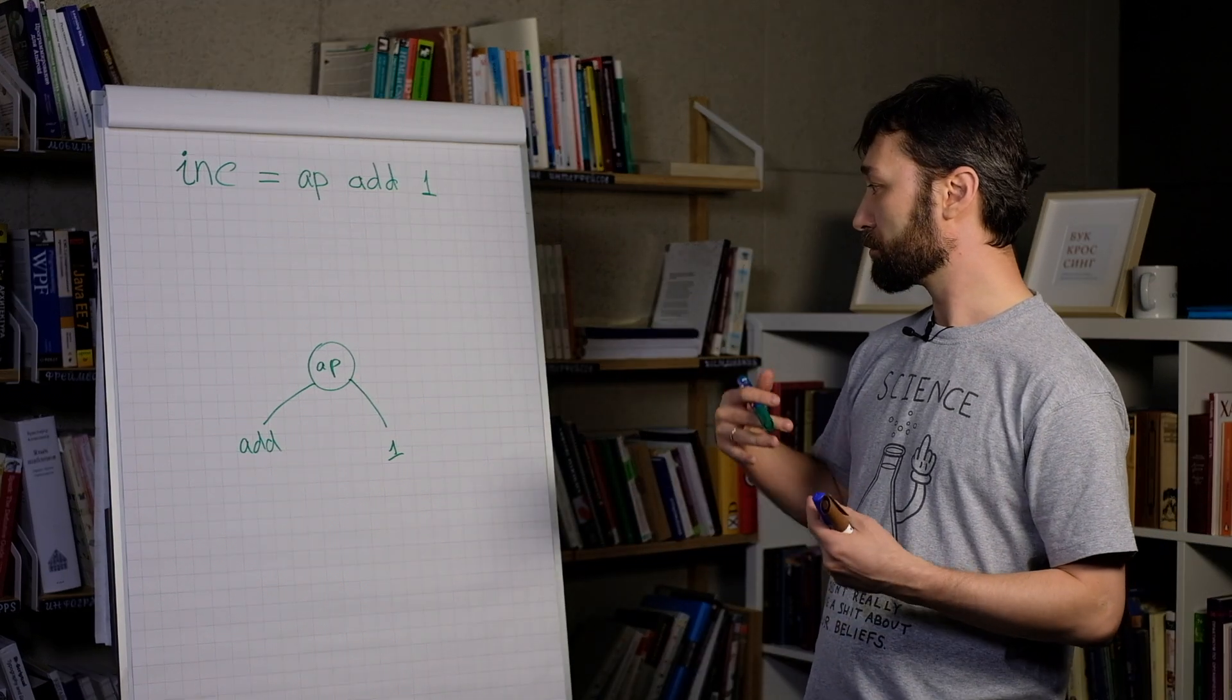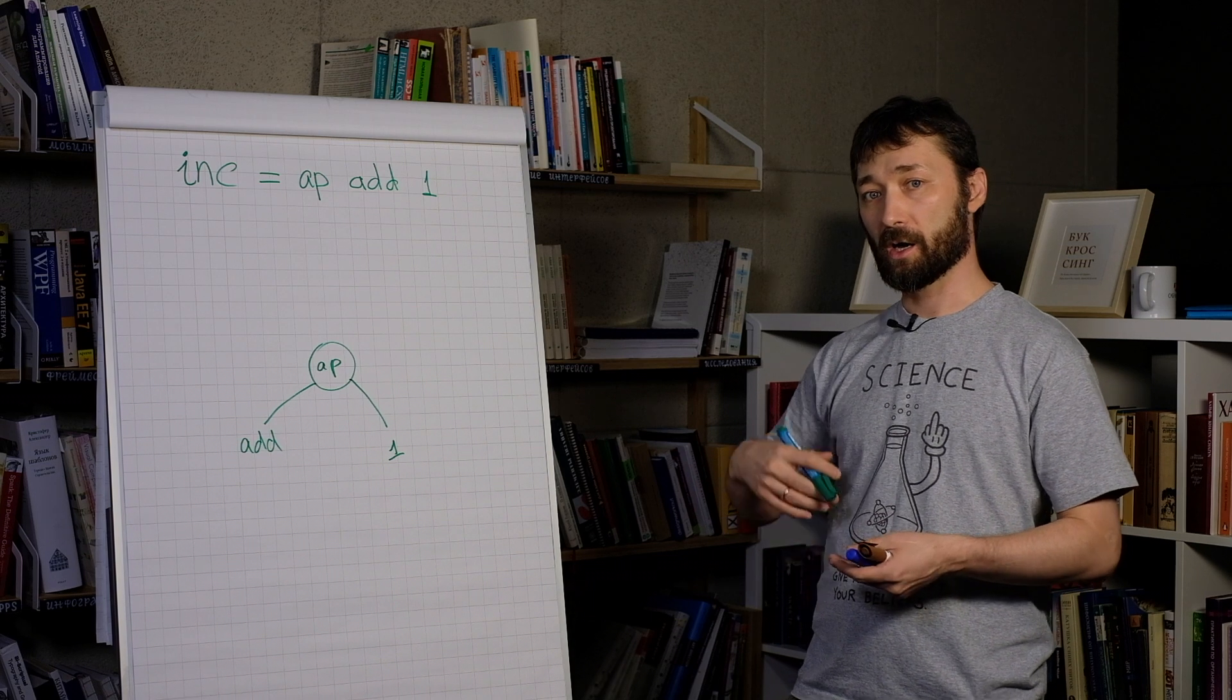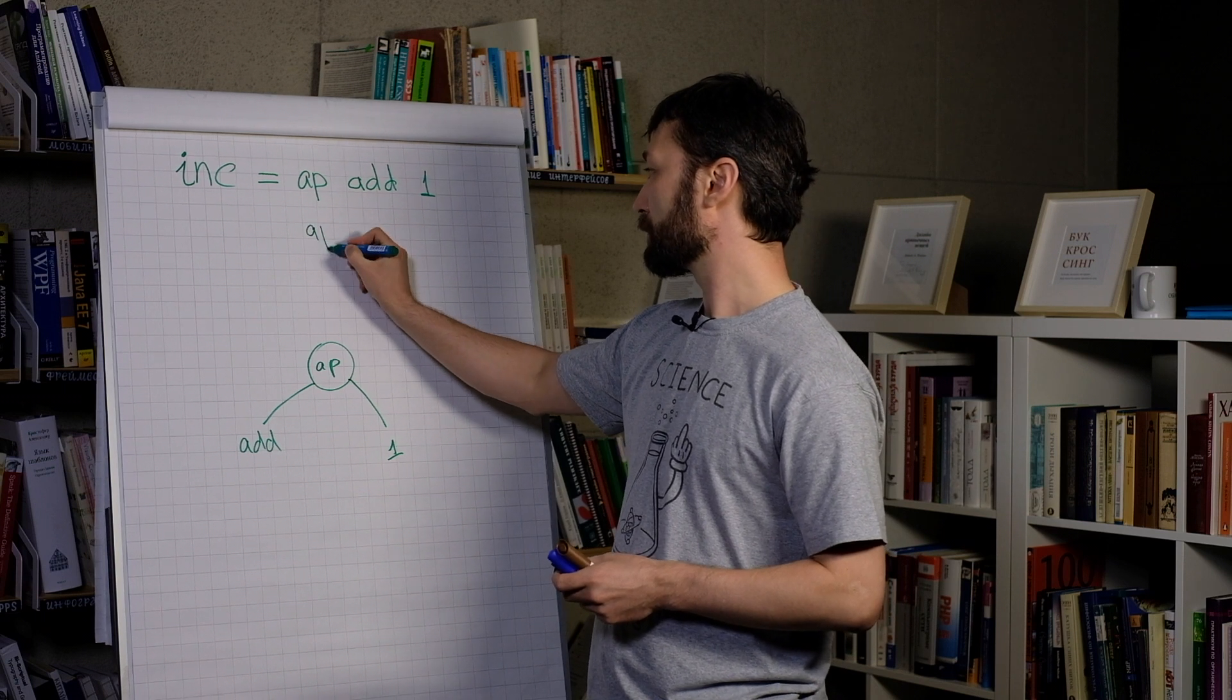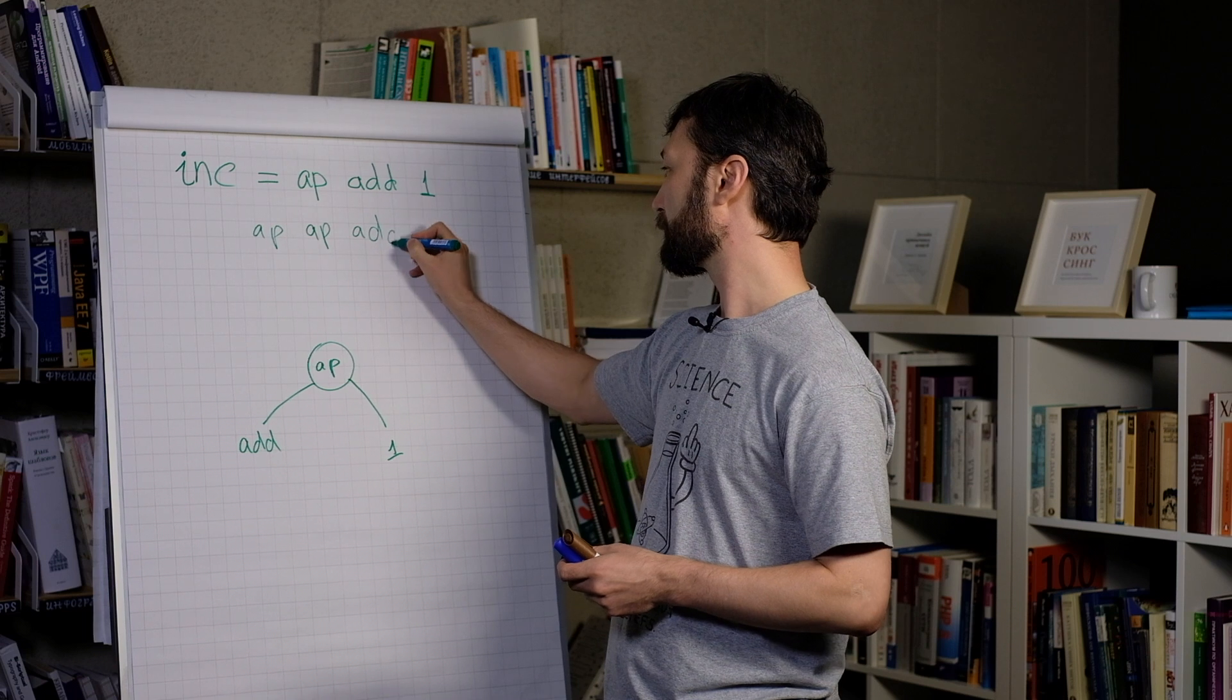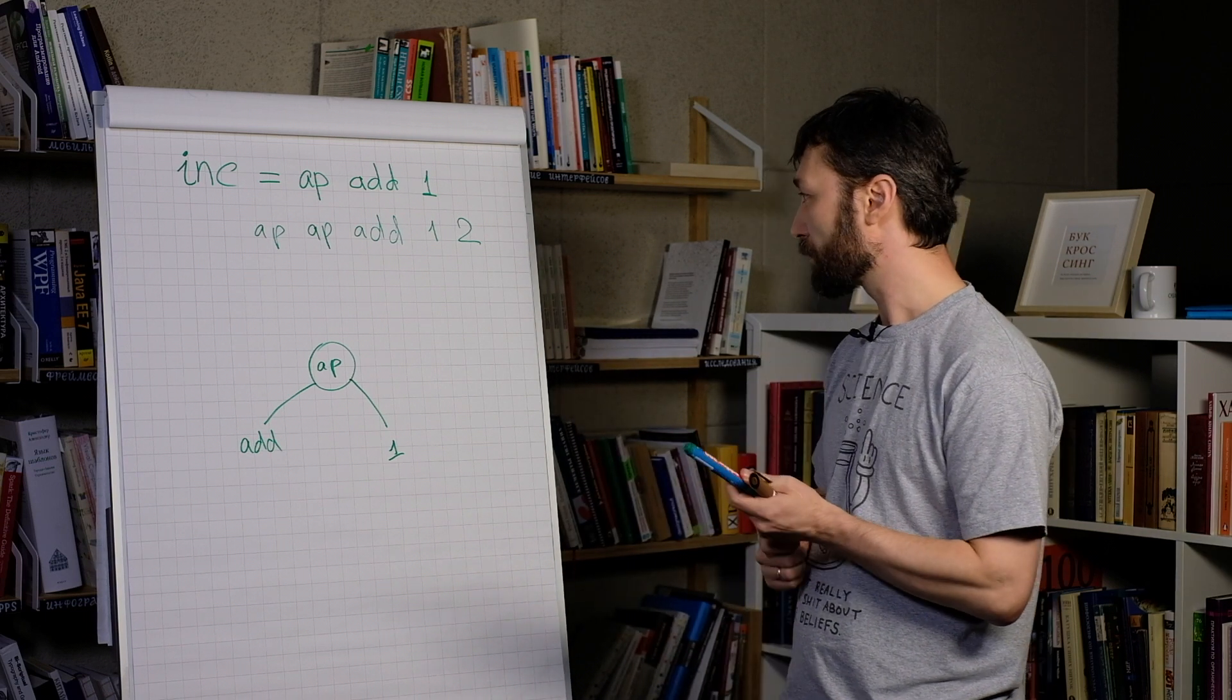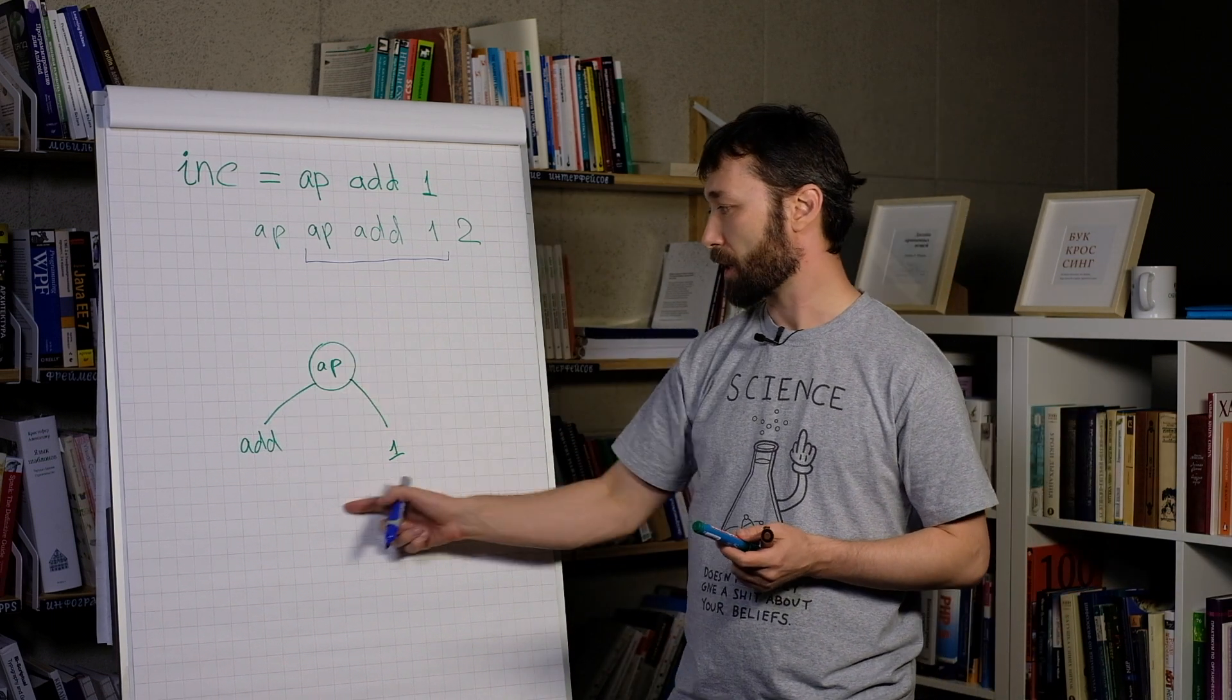And now, let's find out how this notation works with the function, with the binary function with two arguments. Let's do this one. So, we already know how this part works. It's just our picture.